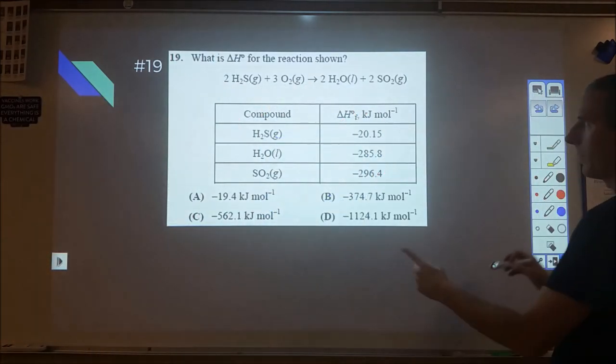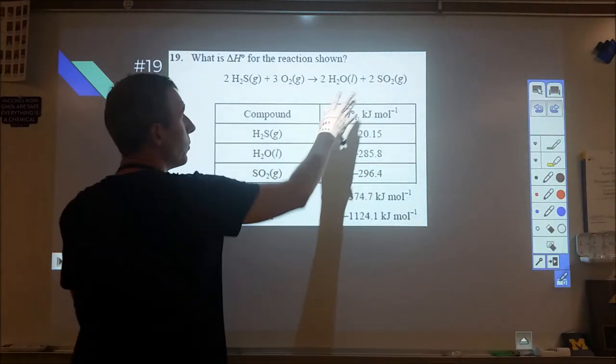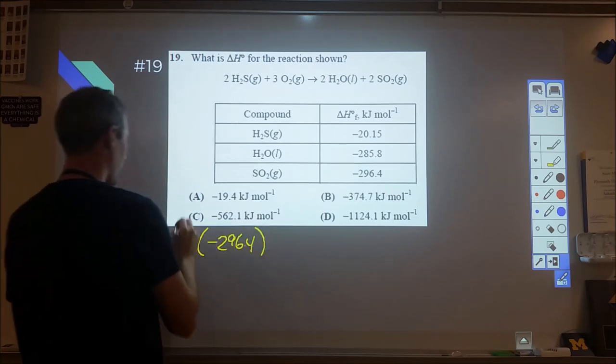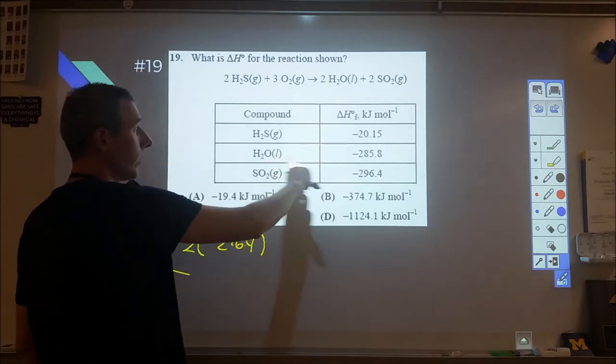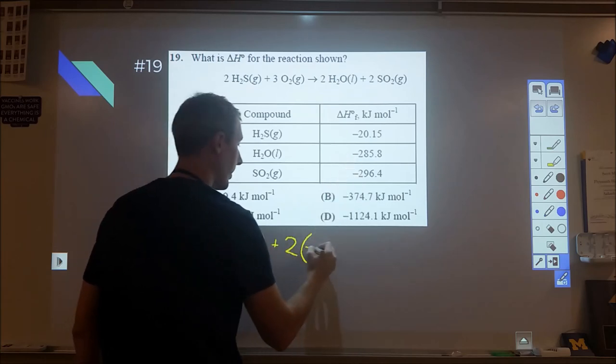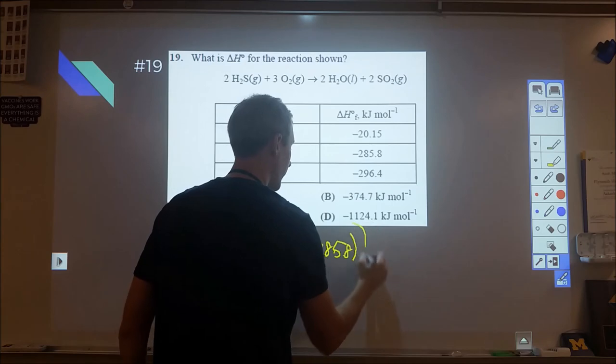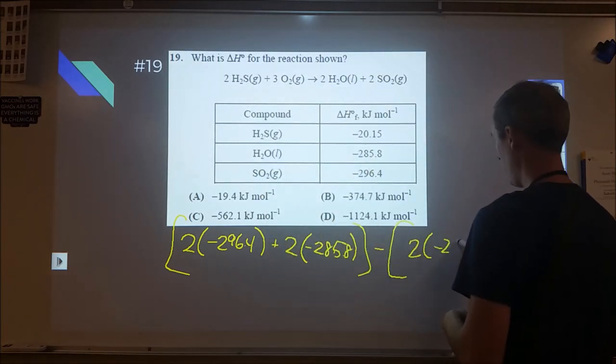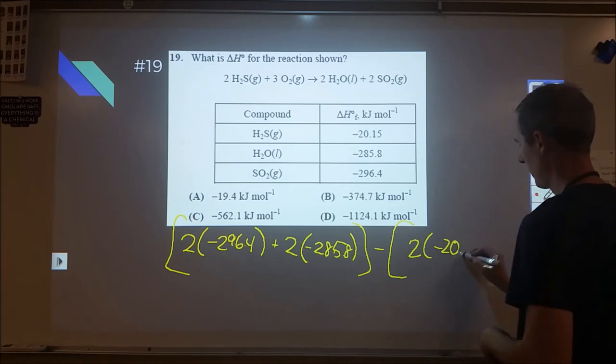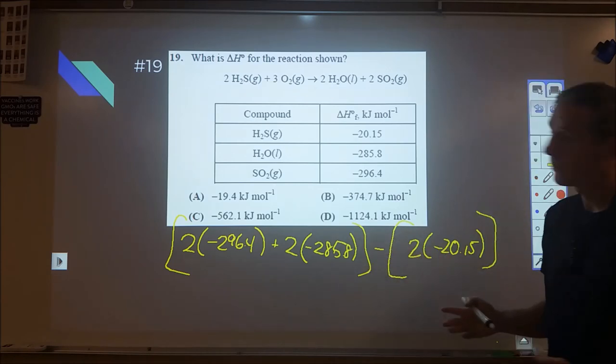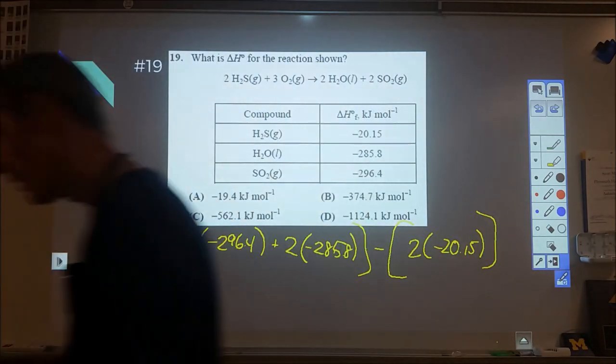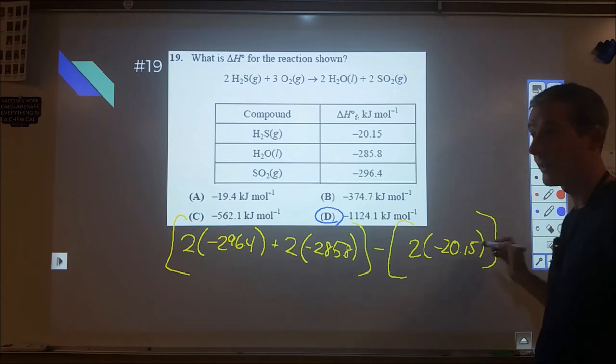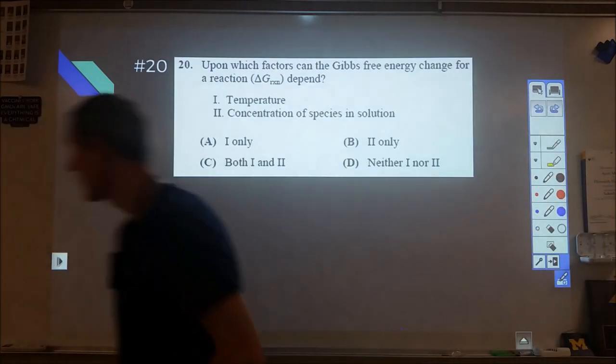Here we're looking at a simple enthalpy of formation calculation, nothing crazy here. We need to do products minus the reactants. So we're going to have two SO2s, so two times negative 296.4, in a big bracket around all of our products. And we've got two liquid waters, and that's negative 2520. So there's all of my products. I'm going to subtract from that all of my reactants. I have three O2s, that's zero, and then two H2S, which is negative 20.15. I'm just going to do the sum of those two, and that ends up coming out to be D, which is negative 1124.1 kilojoules per mole. The units are a match, so we don't have to worry about any conversions there. Otherwise it's pretty straightforward calculation. Of course, oxygen being the element, that's the reason why that was zero, as per our definition.